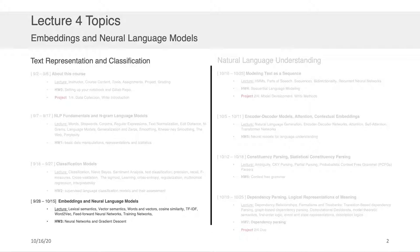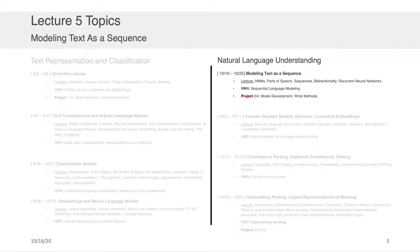The last lecture wrapped up our discussion about text representation and classification, and we're now moving into topics regarding natural language understanding. The first of those topics is how we model text as a sequence. We're going to be covering in this lecture specifically hidden Markov models, maximum entropy Markov models, and recurrent neural networks.